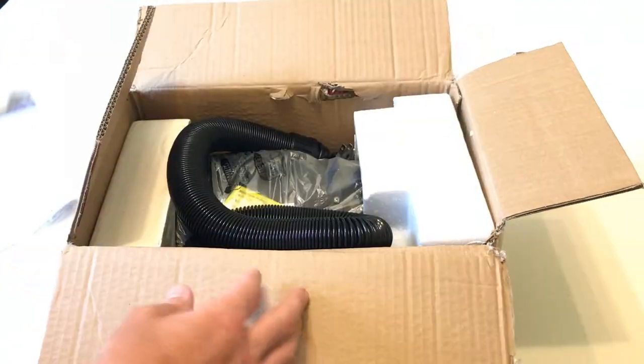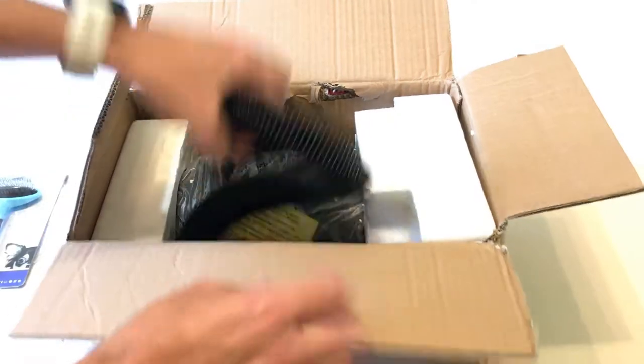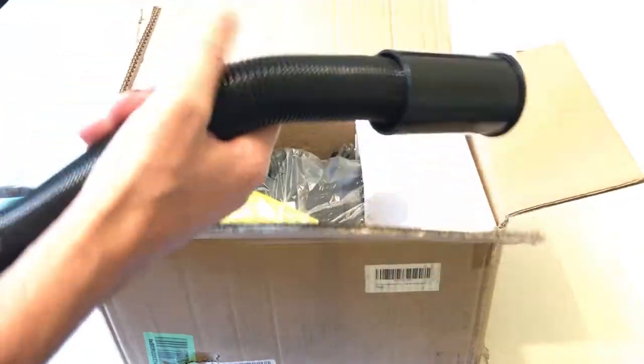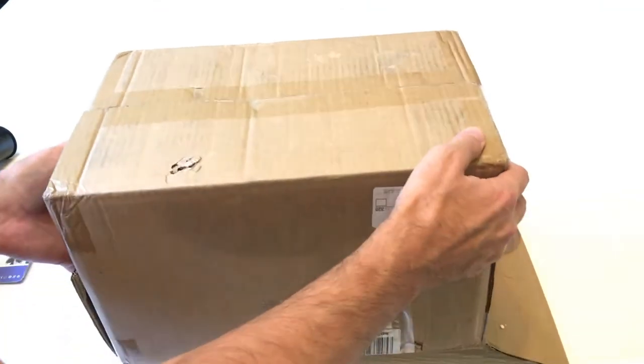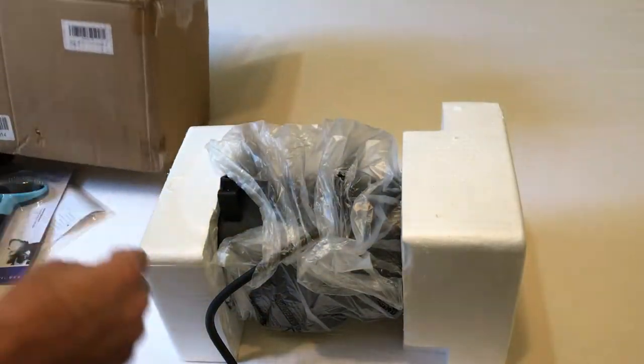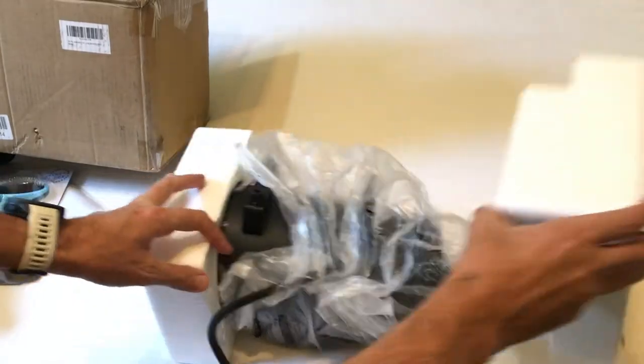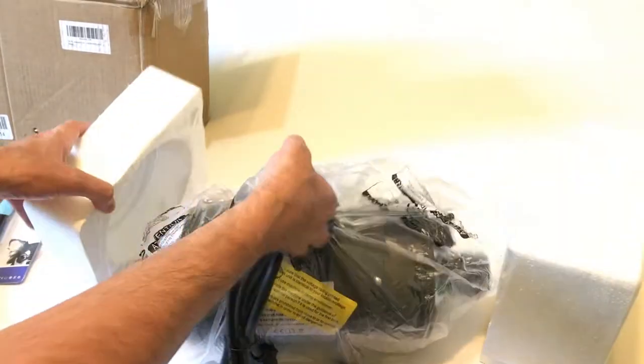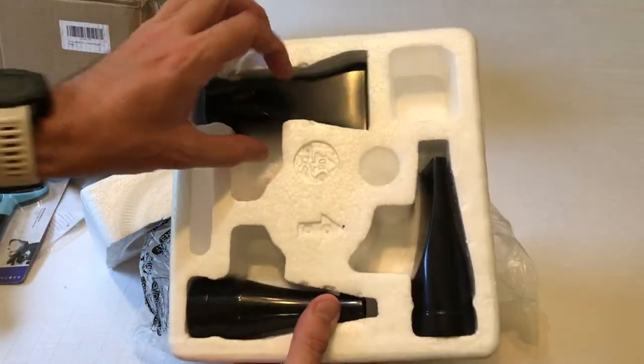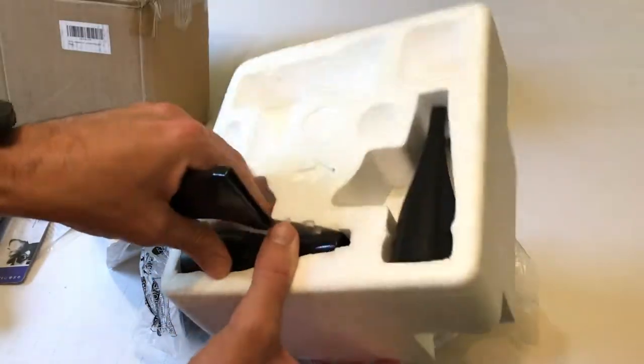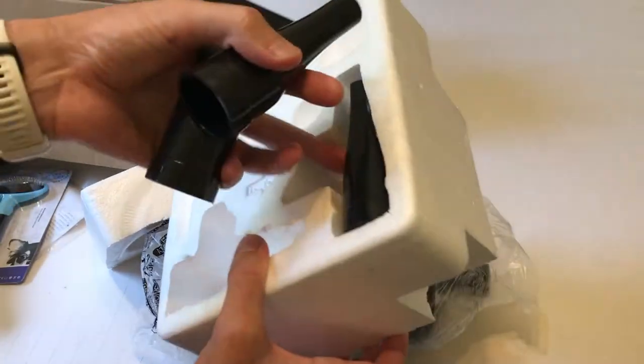So you get a pet brush, instruction manual, the hose, and then the pet dryer itself, and then three heads.